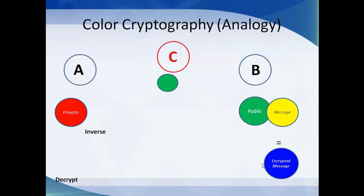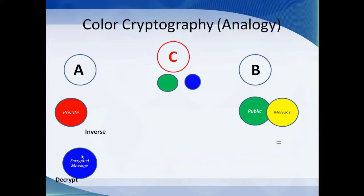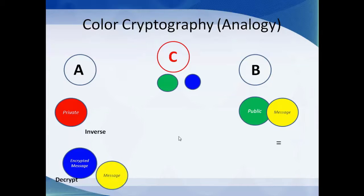Once this encrypted message is obtained at B, it is sent to A. There is again a possibility of C receiving this encrypted message. To get the original message (yellow), C would need a decryptor key, which he lacks. At A's side, since we have the private key, we design a decryptor, decrypt the encrypted message, and retrieve the final message (yellow). This analogy maps to our cryptographic system, and we can derive a mathematical solution from it.